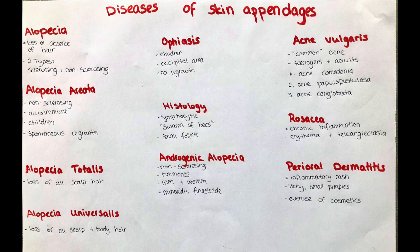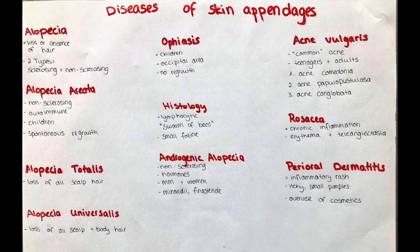Alopecia areata is a type of non-scarring alopecia. Usually it occurs in an oval area and there is no visible inflammation. The etiology remains unknown, but it is thought to be due to an autoimmune process mediated by T cells, so patients can have a genetic predisposition. It can occur at any time in life, but generally children are more often affected. The loss of hair is gradual and can take months to become apparent.